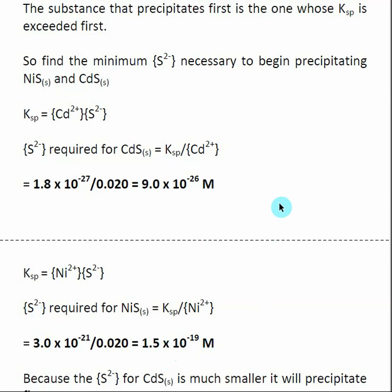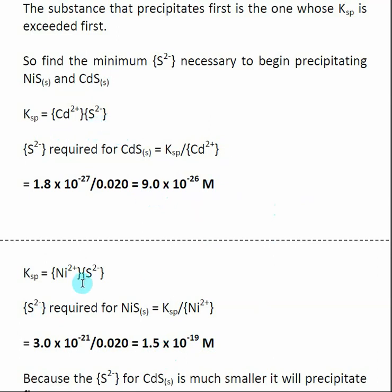Now we can do a direct comparison of these two numbers — which one needs the smaller amount of S²⁻. The concentration of S²⁻ required to precipitate cadmium sulfide is much smaller than that for nickel sulfide. So cadmium sulfide is going to precipitate out first, and nickel sulfide will precipitate out later.